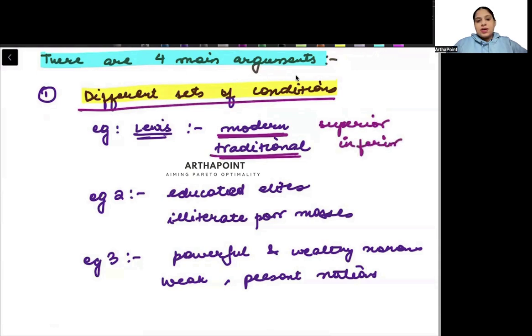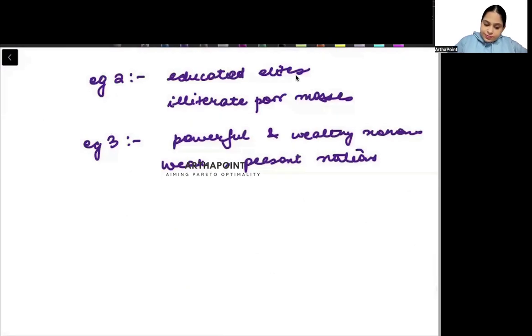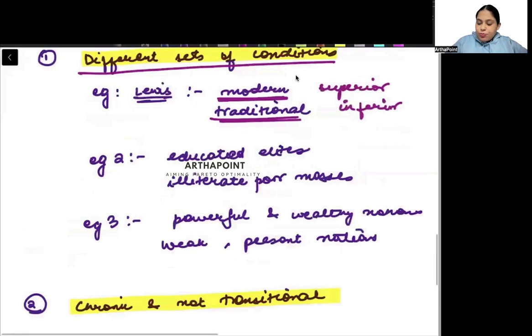Second, this coexistence is chronic and not transitional. This coexistence is chronic and not transitional. It is not that this is a temporary situation and illiterate will be converted to literate soon, or traditional will be converted to modern soon.